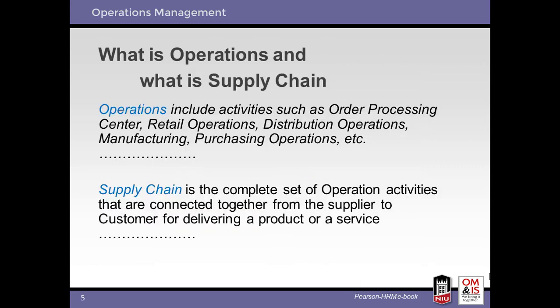Operations are typically associated with a single organization, while the supply chain constitutes the end-to-end process to deliver services and goods. The supply chain starts with material and component suppliers and proceeds through the distribution channel, ultimately ending with the consumer interface where goods and services are delivered.